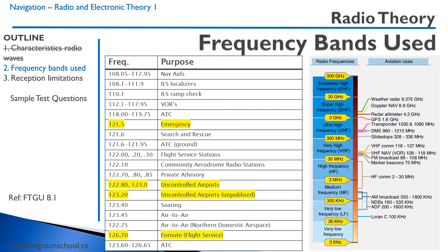Those are VHF frequencies. There are also medium frequencies in use for the ADF — the automatic direction finder — which we're going to discuss, as well as high frequency radio for long-range oceanic communications, but I wouldn't be too worried about those at this point.